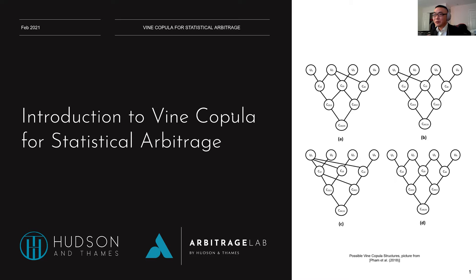Why do we want to talk about vine copulas when regular copulas already look super complicated? Previously I was only talking about pairs trading because the copulas we discussed before are bivariate copulas — they model two random variables. Here we're going to model a cohort of random variables to find mispricing information among several different stocks. This kind of information is usually quite difficult for a human to figure out, and probability tools that can exploit it give you extra edge over other traders.